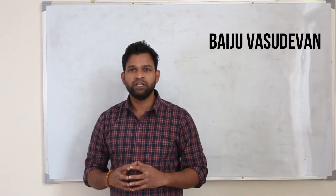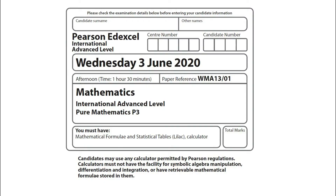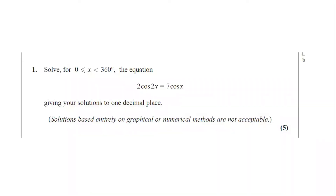Hi, this is Baiju Vasudev and welcome to my channel Pi by Me. Today we are going to solve the June 2020 Pure Math 3 paper. This paper consists of 9 questions. In this part 1 we are going to be looking at question number 1 to question number 3. Question number 1: solve for 0 ≤ x < 360 the equation 2cos2x = 7cosx, giving your solution to 1 decimal place. This question carries 5 marks.